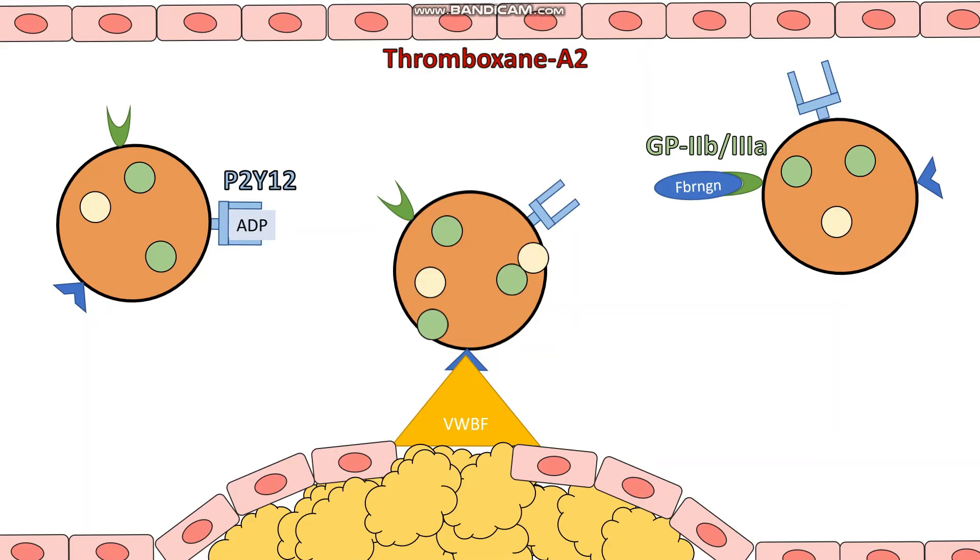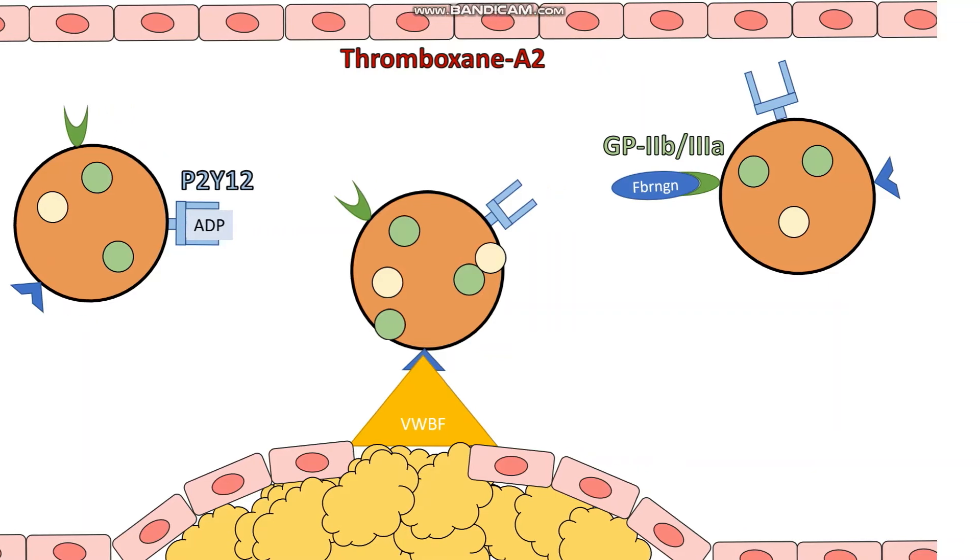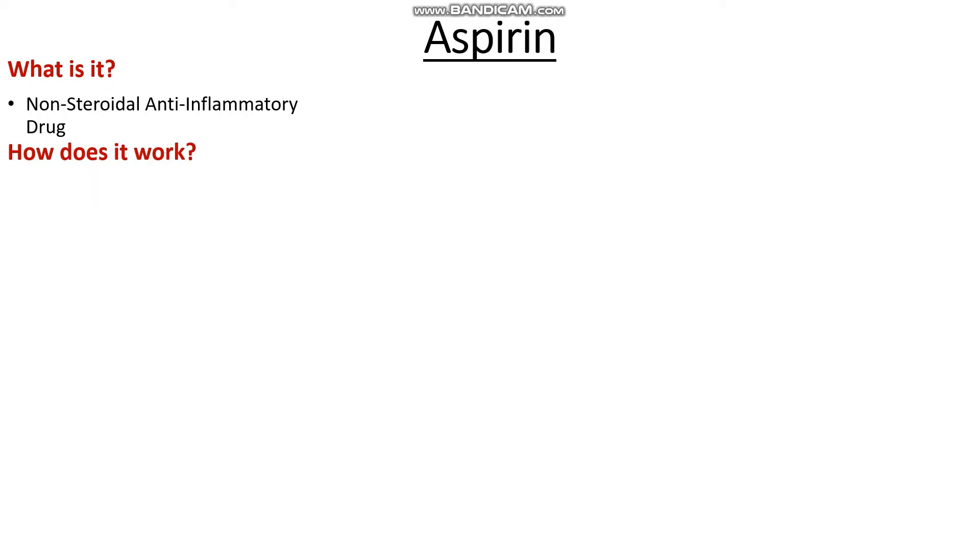Now that we know what may happen if the whole process goes unchecked, what can we do — understanding the physiology of platelets — to stop these events from occurring? Let's break down each of these targets one by one to see how drugs act on them. We'll start with the first and one of the most common drugs that we use, which is aspirin. I'm sure everyone's probably heard of aspirin, because it's a very old drug. So what class of drug does aspirin fall into? It's actually a non-steroidal anti-inflammatory drug — an NSAID.